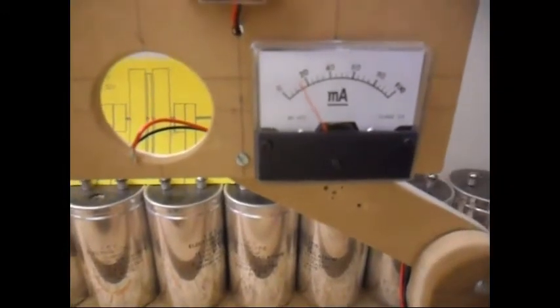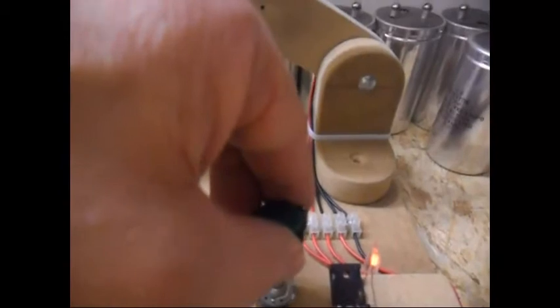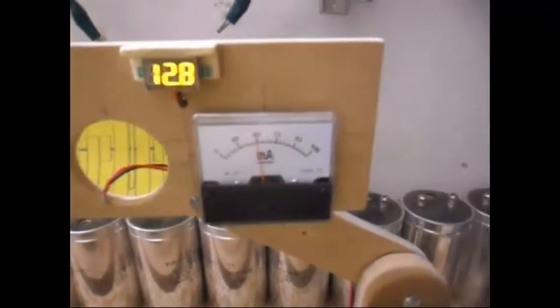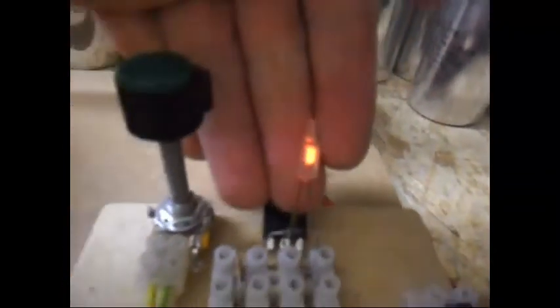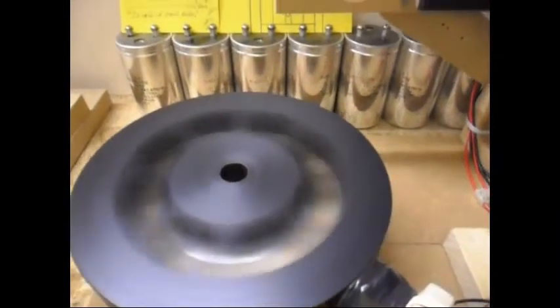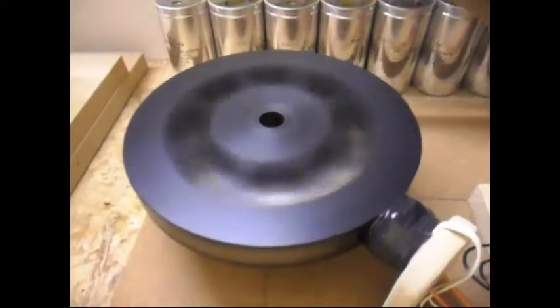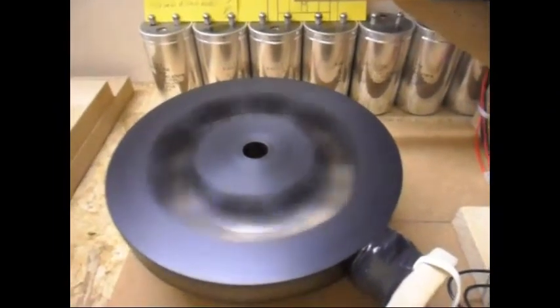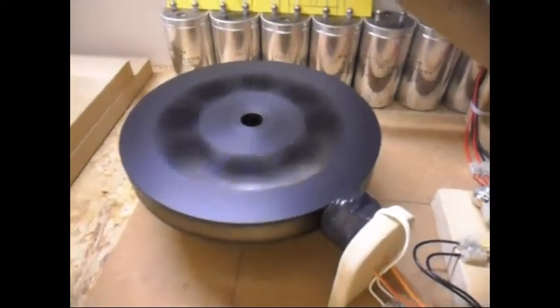It's pulling now around 50 milliamps. Let me adjust the pot a little bit. Now it's around 40 milliamps. There you can see the neon going. The speed isn't that much. It's around 400 RPM. Which is more than enough.